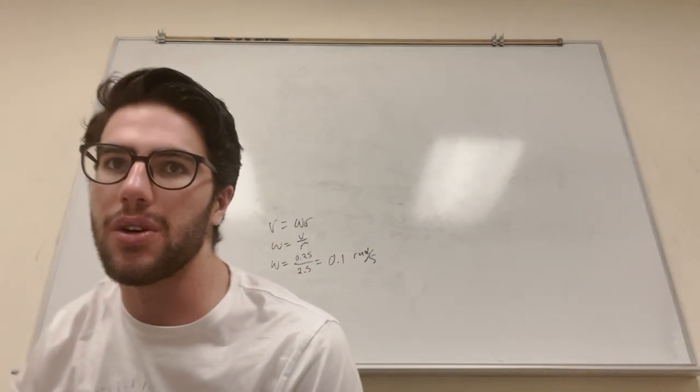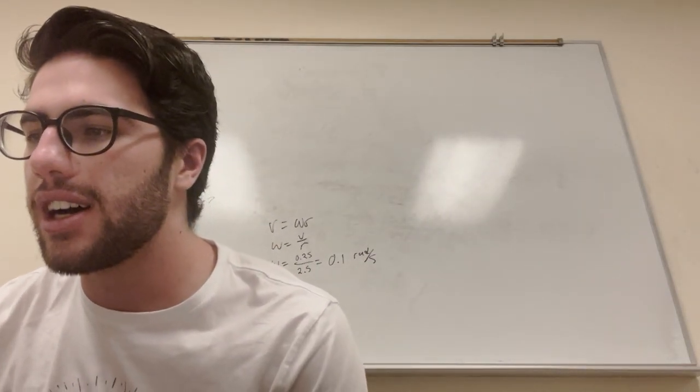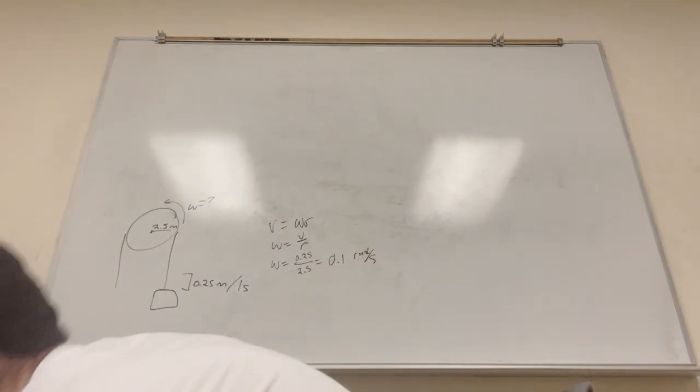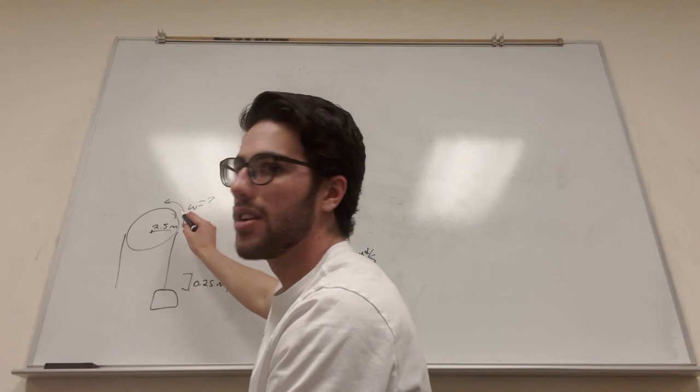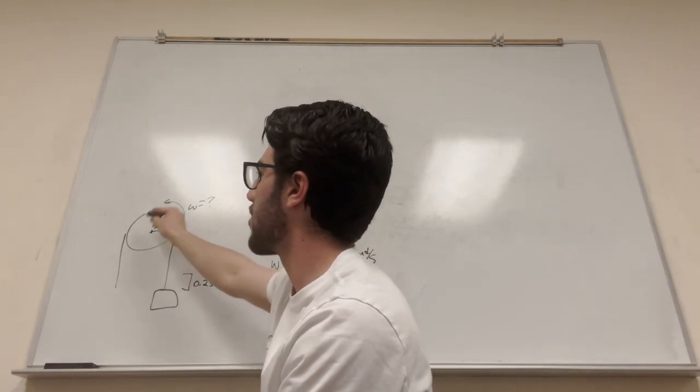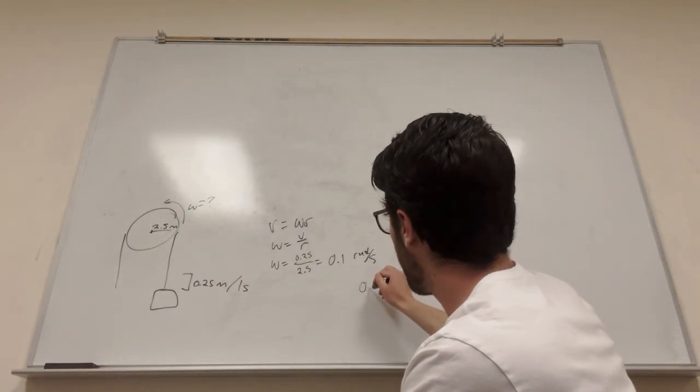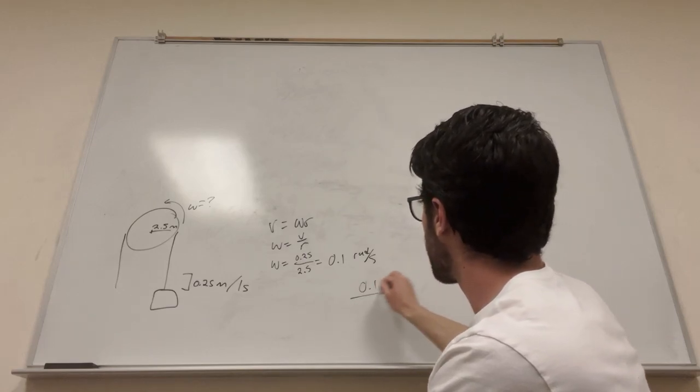But this problem is asking for rates per minute. So rates per minute. Okay, so radian, so 2π radians is a full circle, and our rotation is a full circle. So you can change this. So it's 0.1 radians per second.